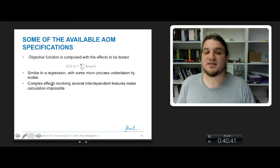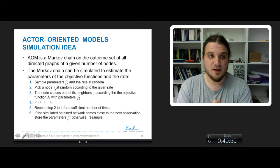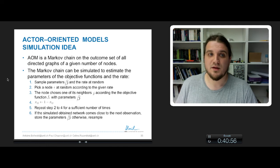Of course, complex effects involving several interdependent features of the networks make calculations impossible, so we still simulate the evolution. So it can be shown that actor-oriented models is a Markov chain, and this can be simulated like before.